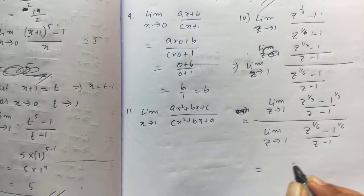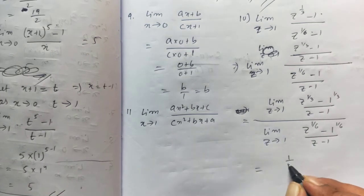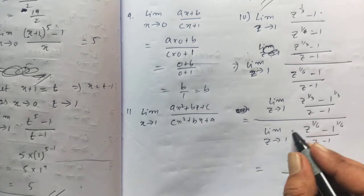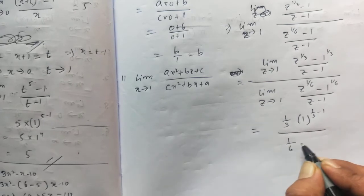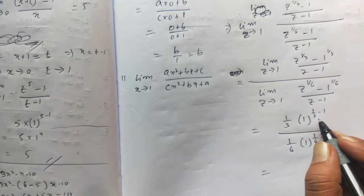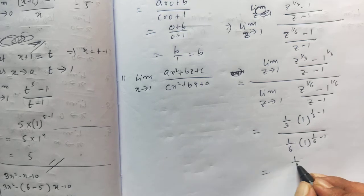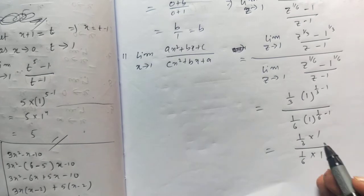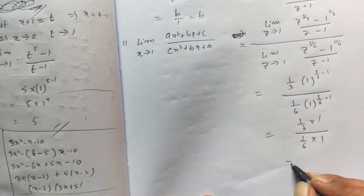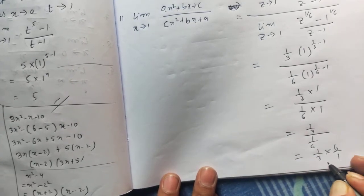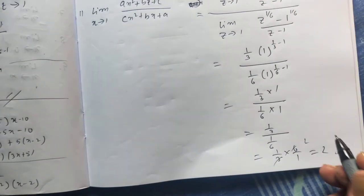Now apply the formula: xⁿ − aⁿ / (x − a) = n·aⁿ⁻¹. On the top, n = 1/3, a = 1, so n − 1 = 1/3 − 1. In the denominator, n = 1/6, a = 1. Power of 1 raised to anything is always 1. So we get (1/3) / (1/6). Taking the reciprocal: 1/3 × 6/1 = 2. The answer is 2.